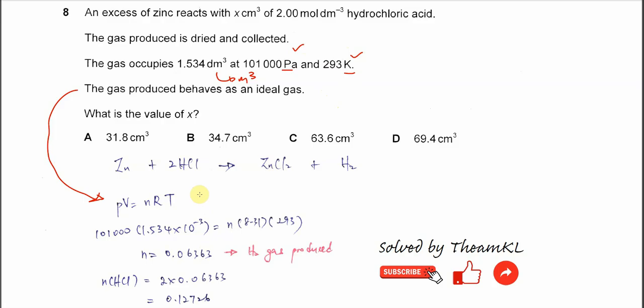Then we substitute all the values there into the PV equal to nRT. So it's 101,000 times the volume. This volume is in m³ already. So it's 1.534 times 10⁻³.